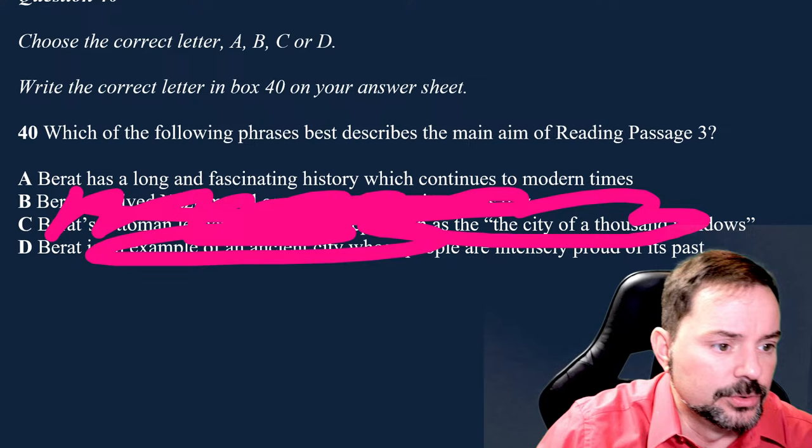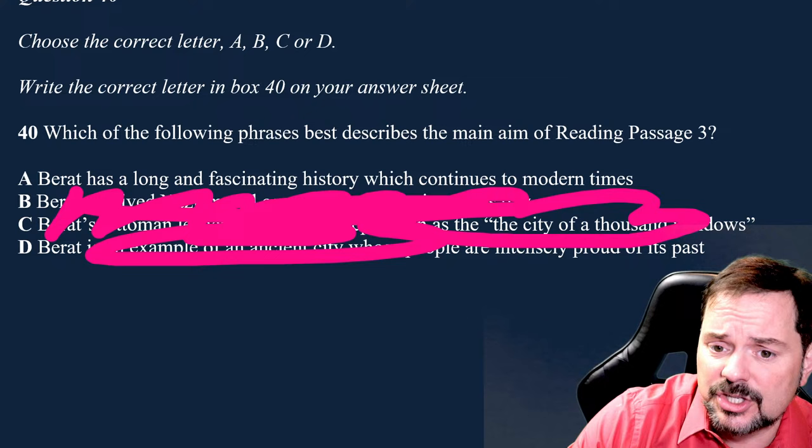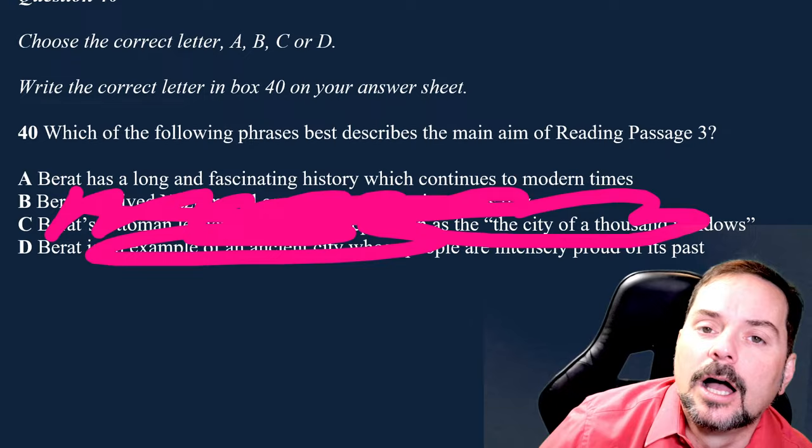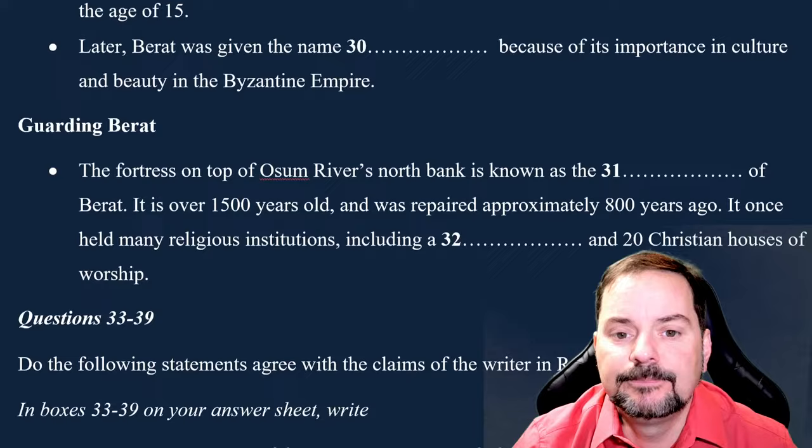Which of the following phrases best describes the main aim of reading passage three? Well, if you're skimming and scanning only, that's going to be really hard — you can't skim and scan for the main aim of the reading passage. You have to read the passage everybody. That's what we need to do. We need to read, and we're going to read together.